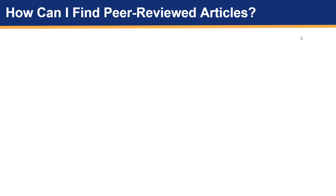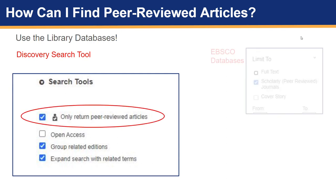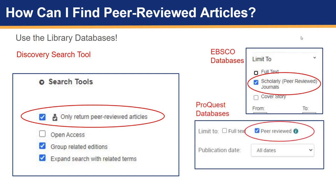So how can you find a peer-reviewed article? Well, there are a few ways. The easiest way is to use the library databases. Most library databases and search tools include a peer-reviewed checkbox option that will limit your search results to only display peer-reviewed articles. So using the library databases is your best choice.